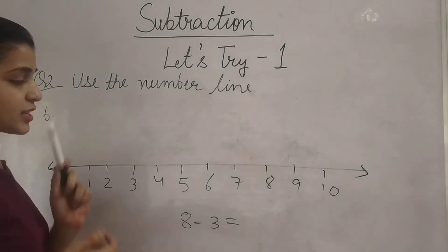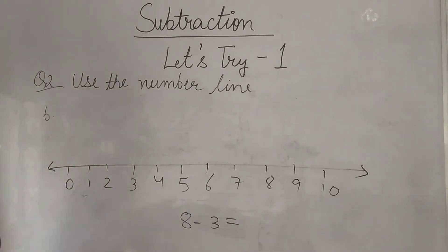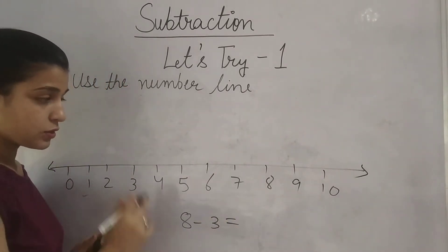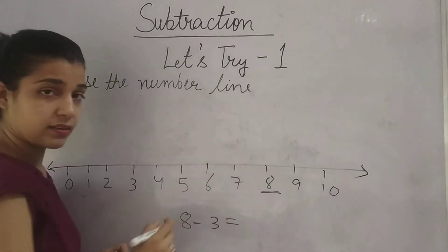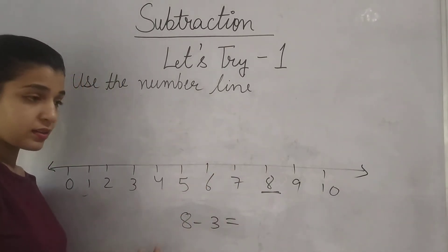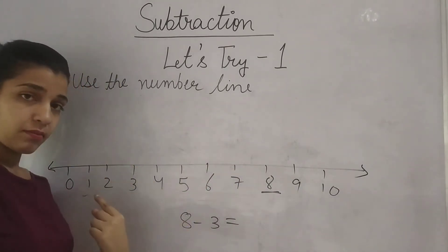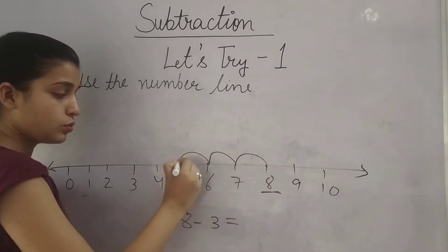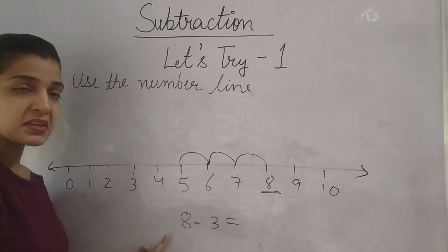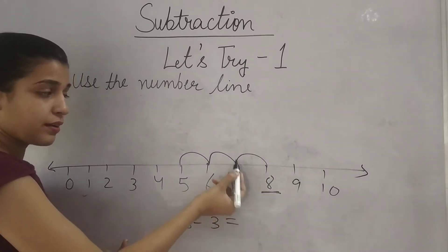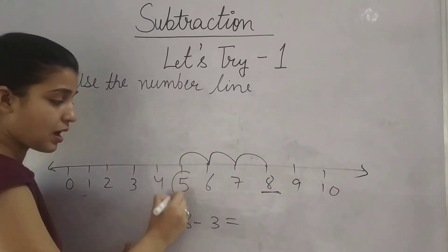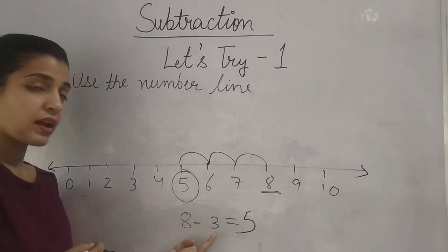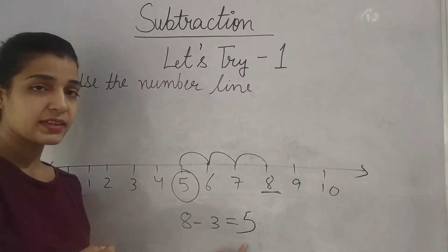Now come to the next one. On the number line, you have to subtract 3 from 8. First find 8, which is here. Now go back 3 times: 1, 2, 3. We went back one step at a time from 8 and landed on 5. The answer is 5 — if we subtract 3 from 8 we get 5.